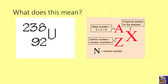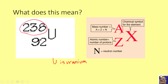On a nuclear symbol, the chemical symbol represents the element — for example, U is uranium. The top number is the mass number, which equals protons plus neutrons, because the nucleus — protons and neutrons — makes up the mass of an atom. The bottom number is called Z, the atomic number, which equals the number of protons.